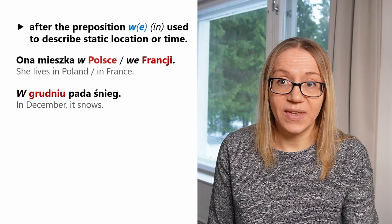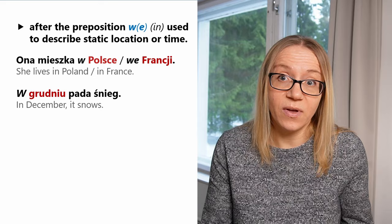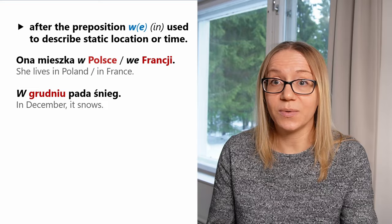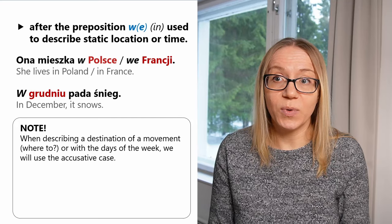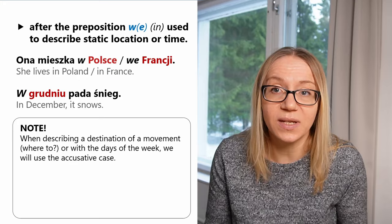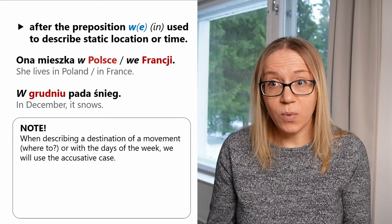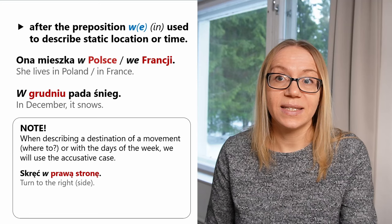To express time, we can also use 'w': 'W grudniu pada śnieg' means 'In December it snows,' where 'grudniu' is in the locative case. We can express place — 'w Polsce,' 'we Francji' — or time — 'w grudniu.' However, note that whenever we have a dynamic situation with movement and we answer the question 'where to,' we will use the accusative case instead of the locative. Also, when telling the days of the week specifically, we use the accusative case.